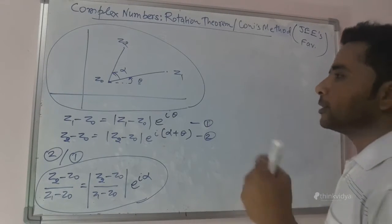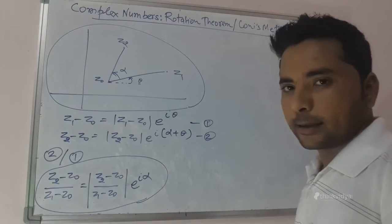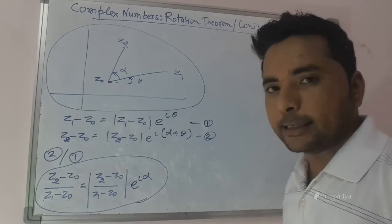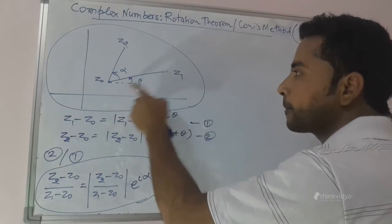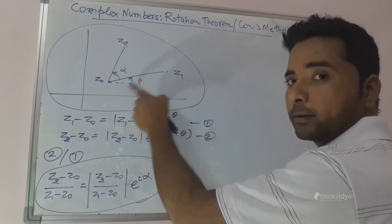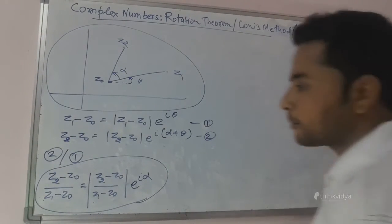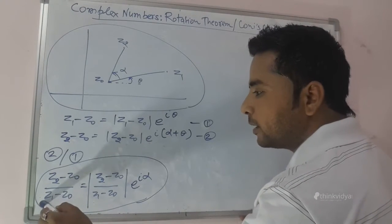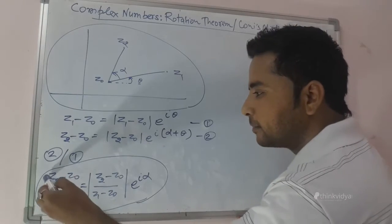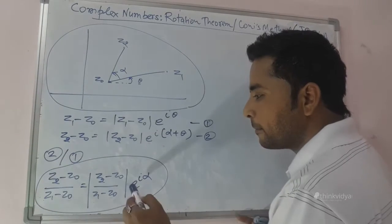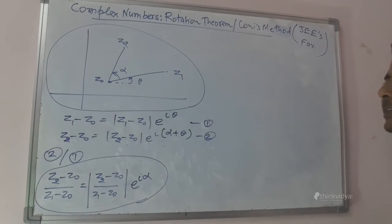During this rotation, not only does the position of Z1 change and become Z2, but the distance between Z1 and Z0 also changes. So if Z1 is rotated about Z0, it becomes Z2 after a rotation of angle alpha in the positive or anticlockwise direction.